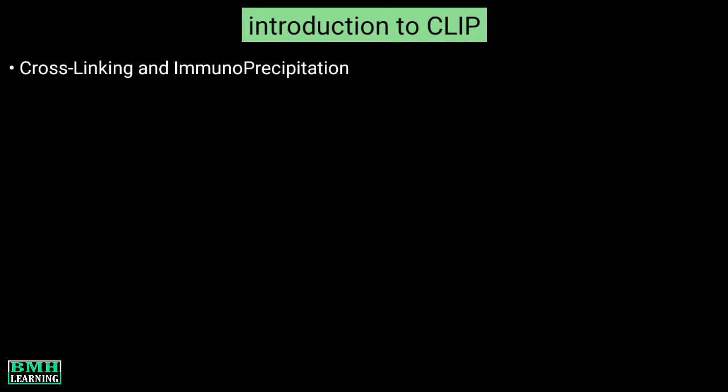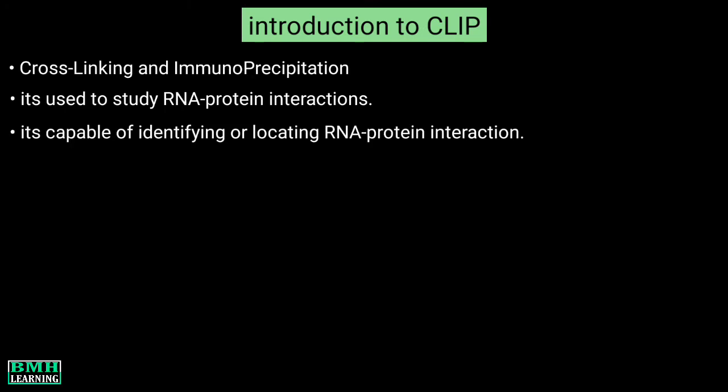Hello friends, welcome to BMH Learning. In this video I'm going to discuss the CLIP technique. First let's get into the introduction of this topic. CLIP means cross-linking and immunoprecipitation. The technique is used to study RNA-protein interactions — we can say it is a method capable of identifying or locating RNA-protein interactions.